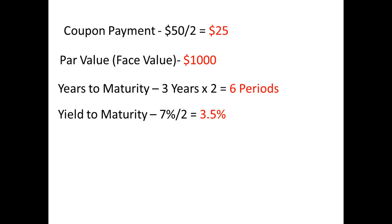For example, imagine that there is a semi-annual bond with a par value of $1,000, a coupon rate of 5%, and still has 3 years until it reaches maturity. Now imagine that the yield to maturity is 7%. How would we calculate the present value of this bond?